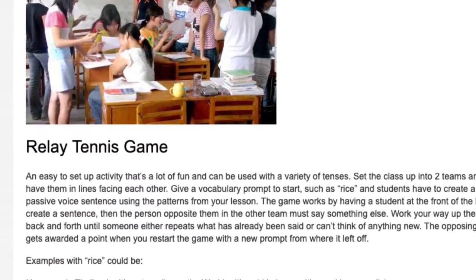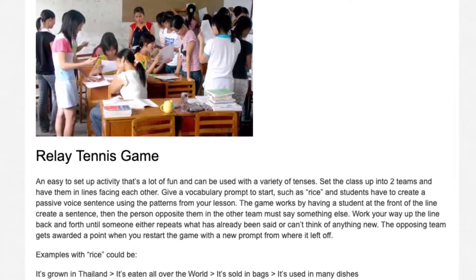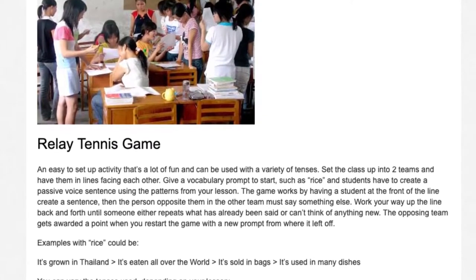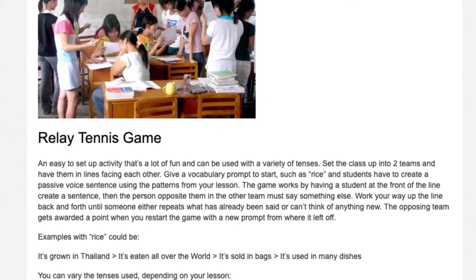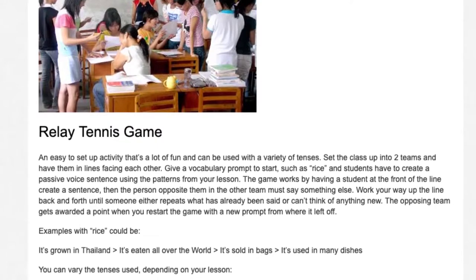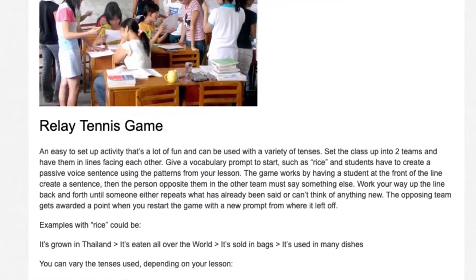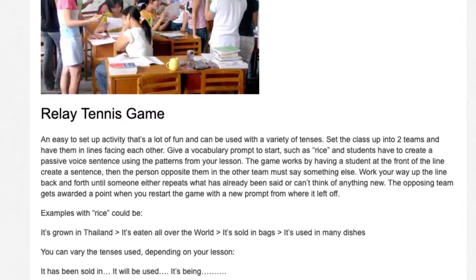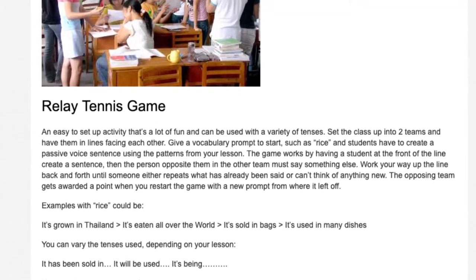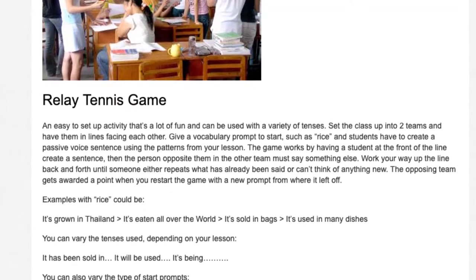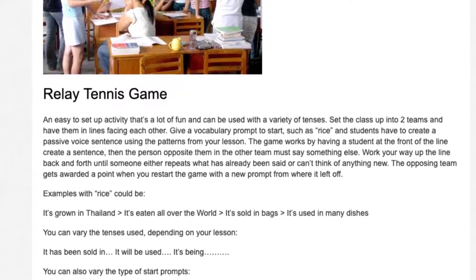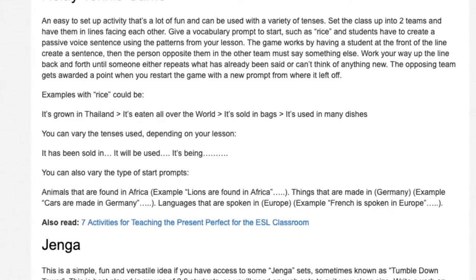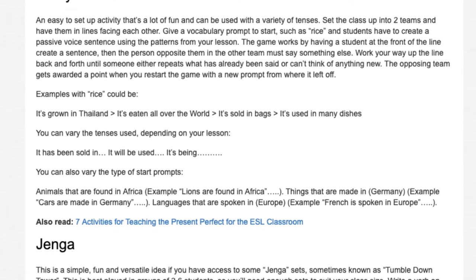4. Relay Tennis Game. An easy-to-set-up activity that's a lot of fun and can be used with a variety of tenses. Set the class up into two teams in lines facing each other. Give a vocabulary prompt such as 'rice' and students create a passive voice sentence. A student at the front creates a sentence, then the person opposite in the other team must say something else. Work up the line back and forth until someone repeats what's been said or can't think of anything new. Examples with rice: 'It's grown in Thailand,' 'It's eaten all over the world,' 'It's sold in bags,' 'It's used in many dishes.' You can vary tenses: 'It has been sold in...,' 'It will be used,' 'It's being...' Also vary prompts: animals found in Africa, things made in Germany, languages spoken in Europe.